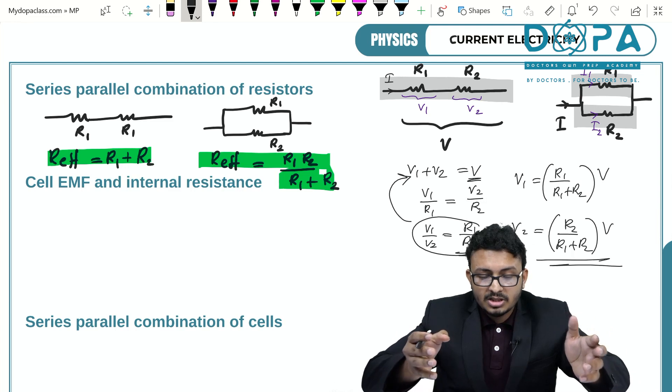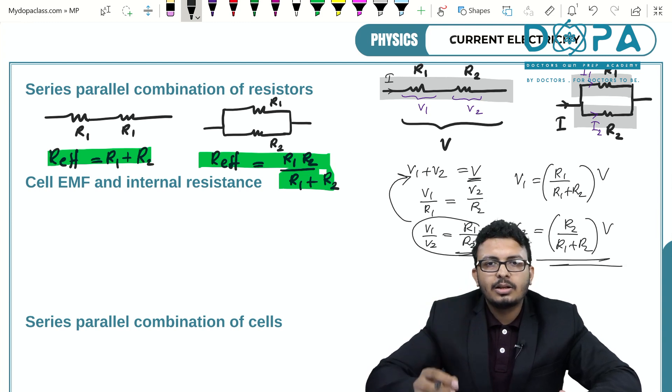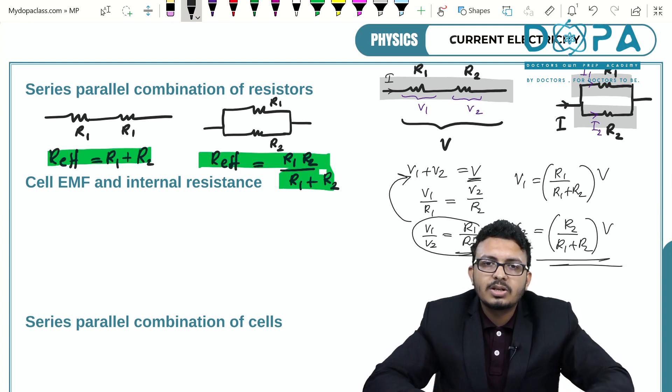This is the result. This is the potential difference across each of the resistors when they are connected in series and the total potential difference across the combination is V.